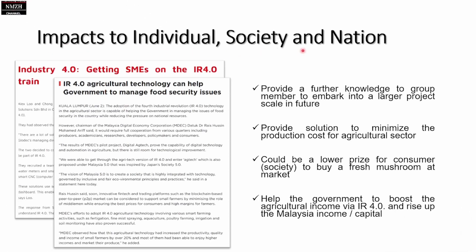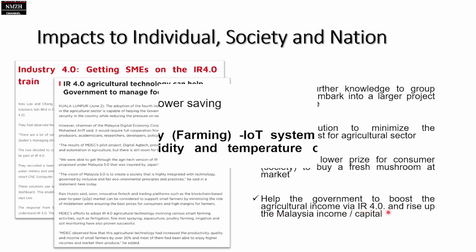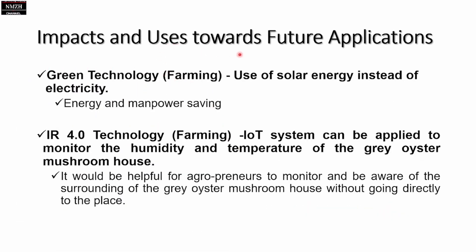Speaking of impacts to the individual, society, and nation: for the individual, we provide further knowledge to group members to embark into a larger project scale in the future. This project also provides a solution to minimize production costs for the agricultural sector, and we could lower the pricing for consumers, who can buy fresh grey oyster mushrooms at the market at a lower price. To the nation, we try to help the government boost agricultural income via the impact of IR 4.0. This product could also deliver a good application in green technology farming and IR 4.0 technology, especially in farming.